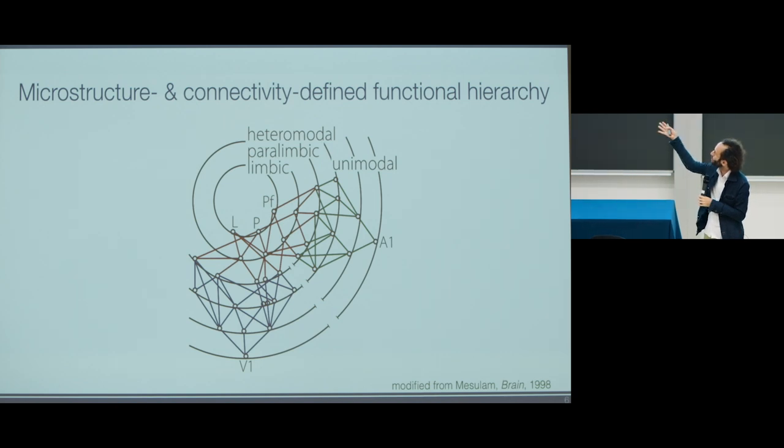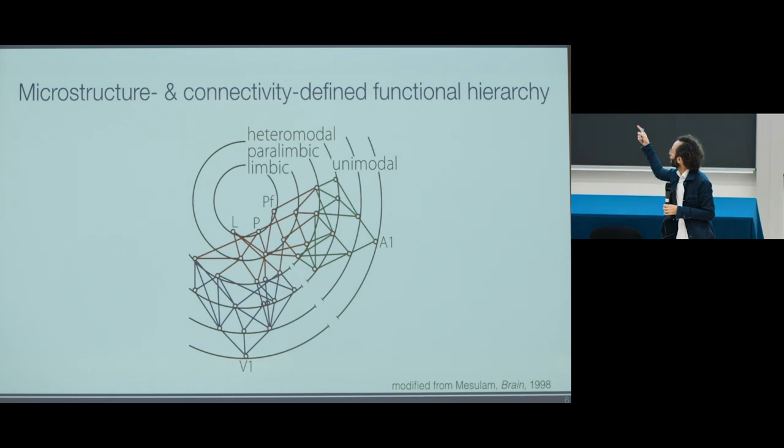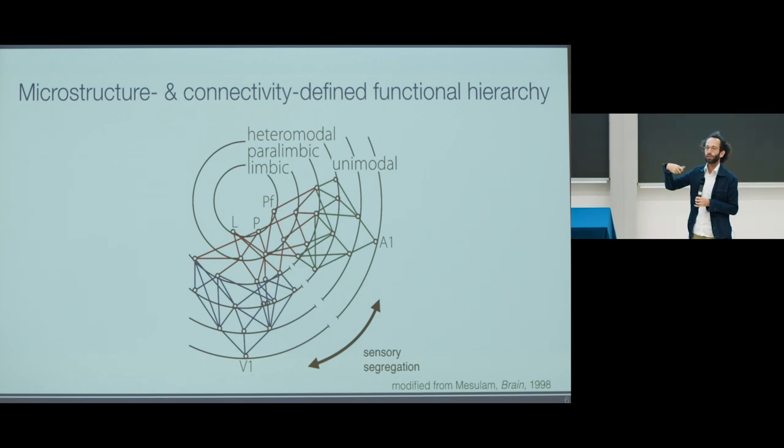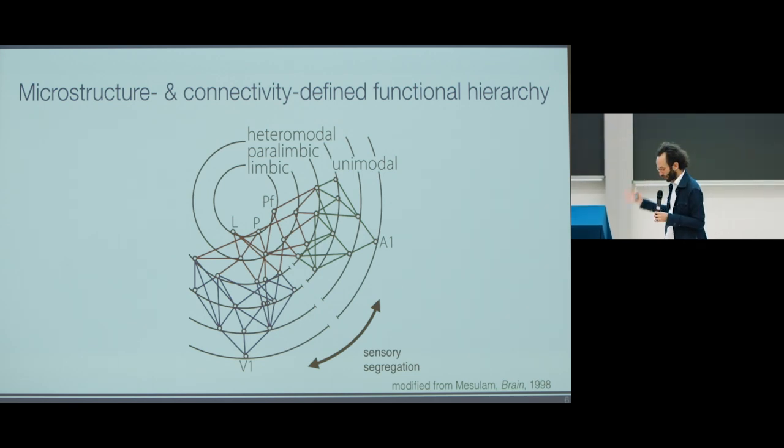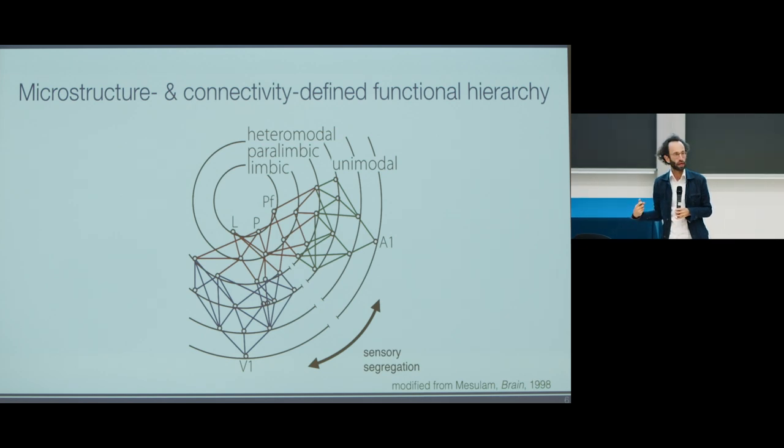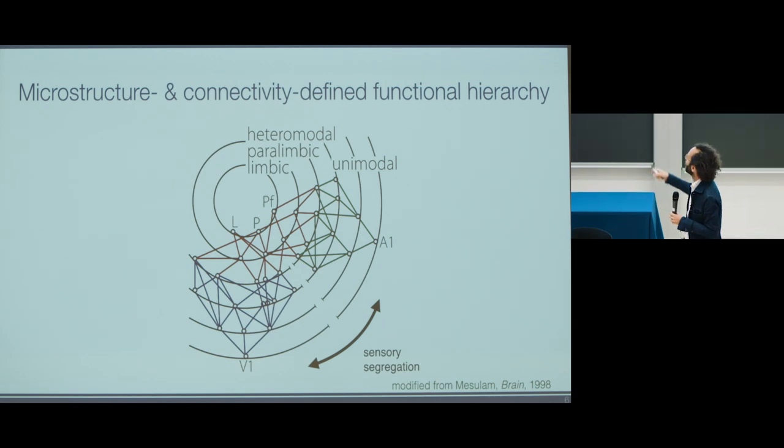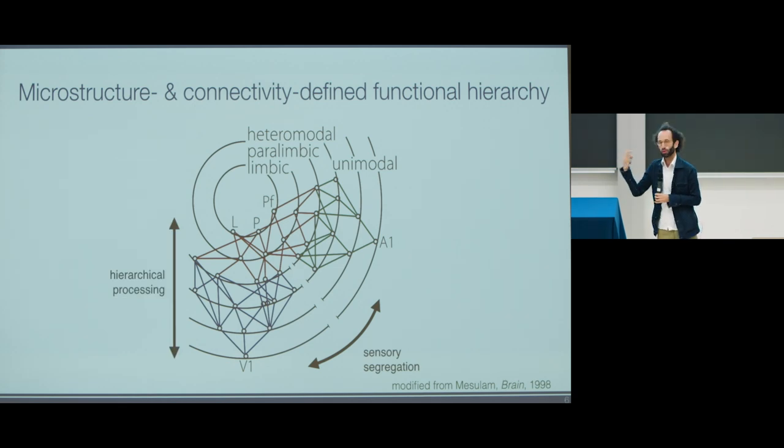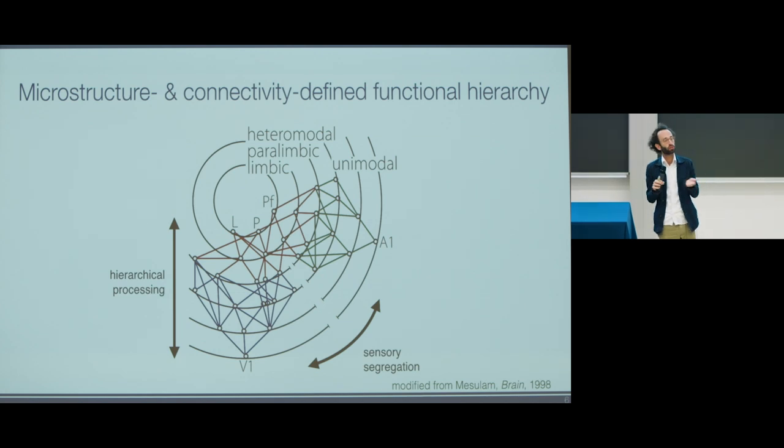All of this that he proposes is based on tract tracing work in the macaque monkey, which he hypothesizes to be present in the human brain. It's precisely this structure that we aim to investigate using empirical data. The model proposes sensory segregation, and as we move towards the center of these concentric circles along individual synaptic steps, he describes this as hierarchical processing towards a center, an integrative set of regions, a transmodal region shown in red.